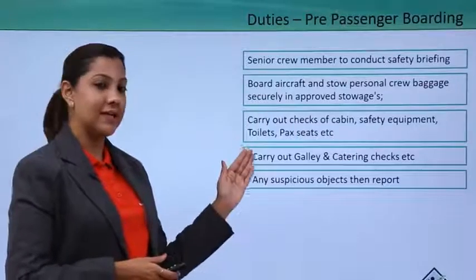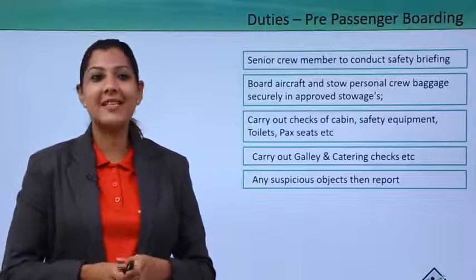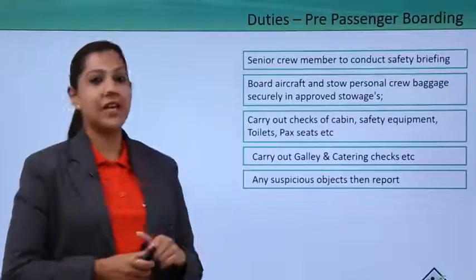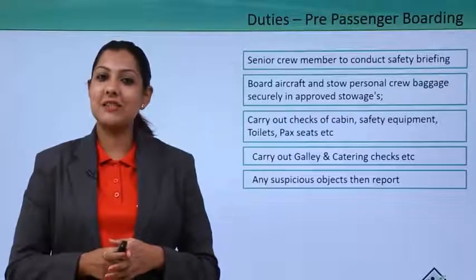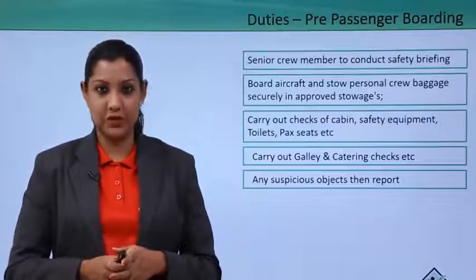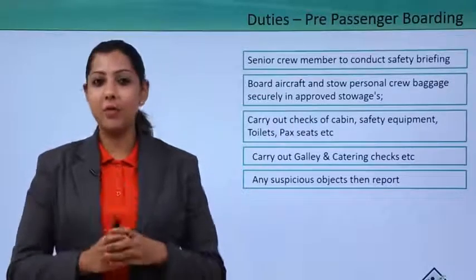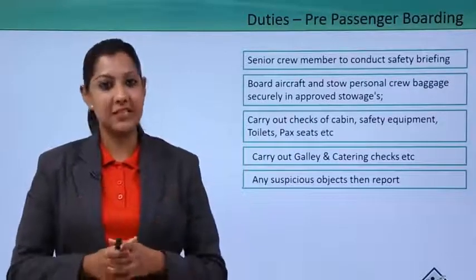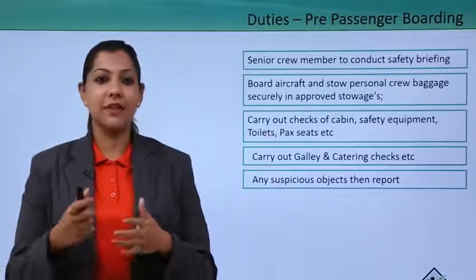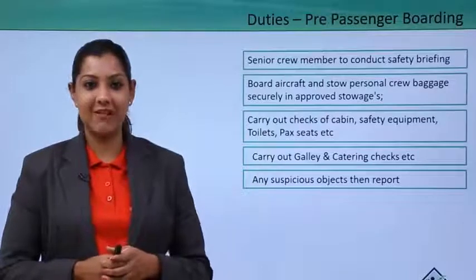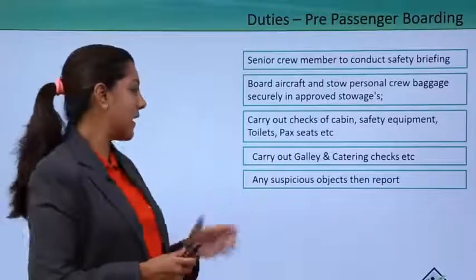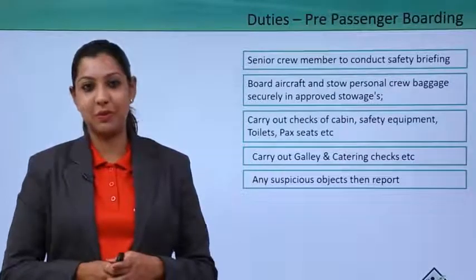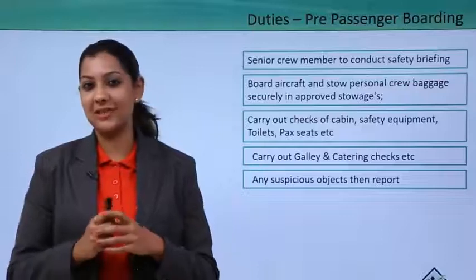They check the toilets and passenger seats, making sure a life jacket is under each seat and toilets are neat and clean. They also carry out a galley check and catering check. The galley is the aircraft kitchen where food and beverages are stored. The designated galley crew member ensures catering matches the number of passengers, with no shortage of meals or beverages. Any suspicious objects must be reported to ground staff immediately.